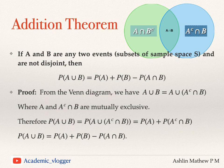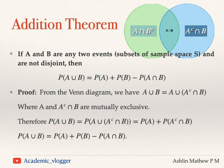From the Venn diagram we can write A union B as the union of two disjoint sets: A and A-complement intersection B. A is the total green circle, and A-complement intersection B is B excluding the intersection. We know that A and A-complement intersection B are both disjoint, so we can write A union B as A union (A-complement intersection B).